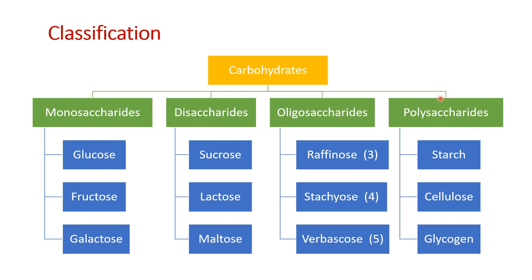Similarly, a disaccharide when hydrolyzed breaks into two monosaccharide units. Common examples of monosaccharides are glucose, fructose, and galactose. Very popular disaccharides are sucrose, lactose, and maltose. The table sugar we use in our day-to-day life is not glucose — it is actually sucrose. Glucose is Glucovita and Glucon D. Lactose is the carbohydrate present in dairy products — it is a disaccharide. Maltose is also present in malt extract and is also a disaccharide.